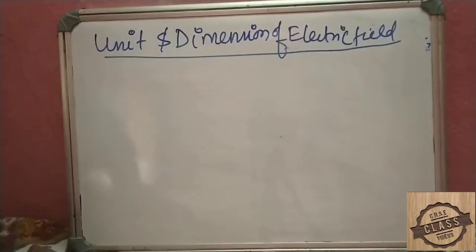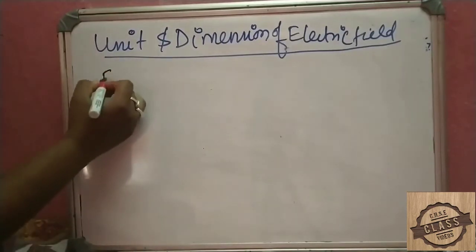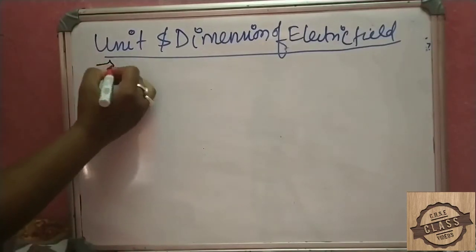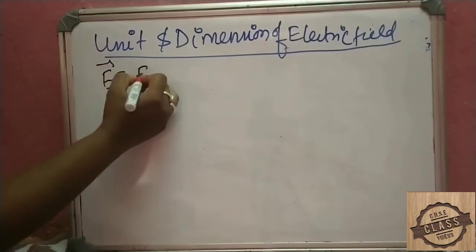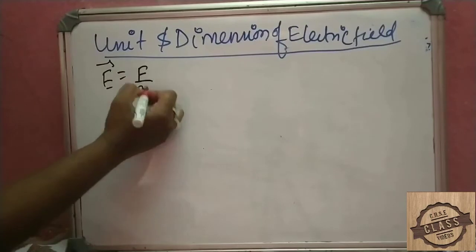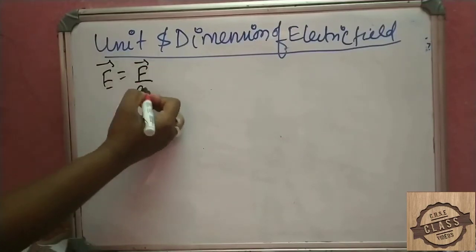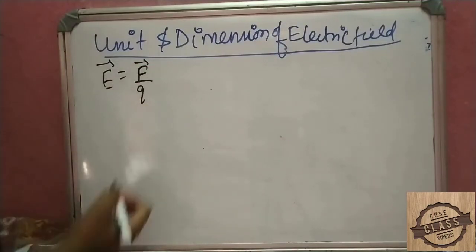This is the unit and dimension of electric field. The formula is E is equal to F by Q, so the unit is F by Q.